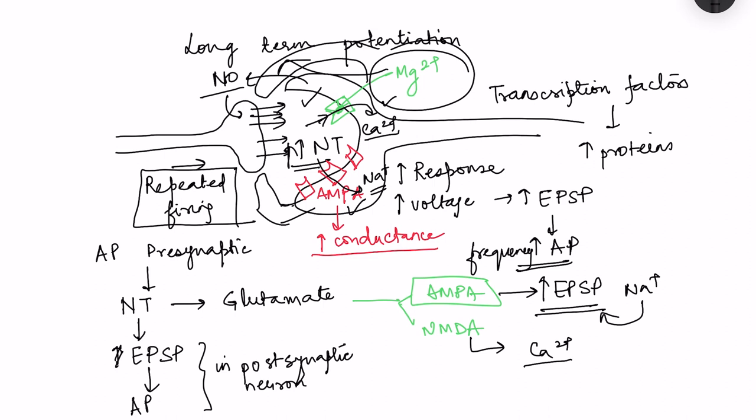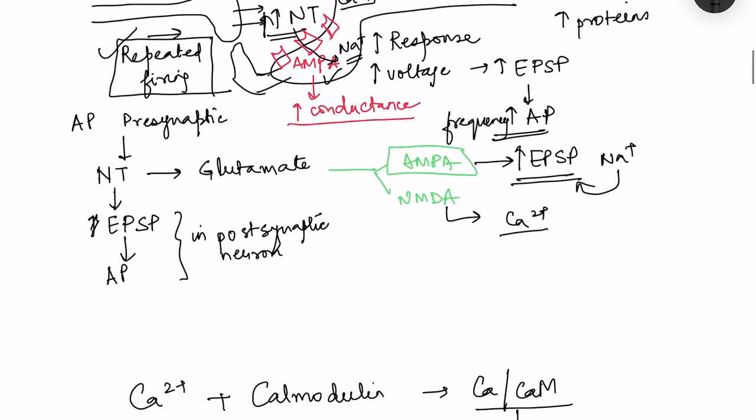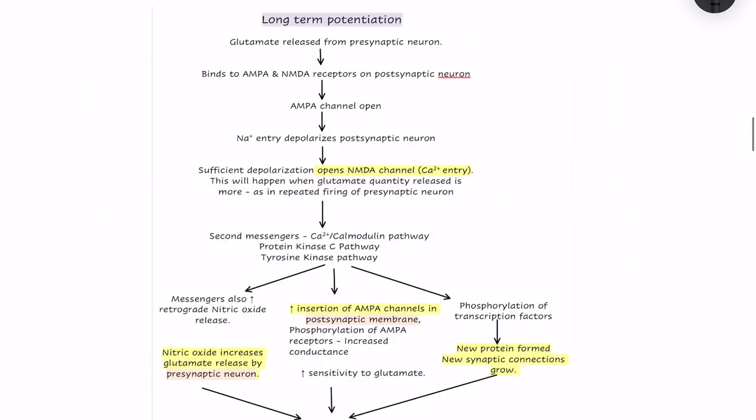The keyword here is repeated firing, because only when repeated firing happens will there be increased release of neurotransmitter. This allows enough AMPA receptor activation so that EPSP reaches the level required to remove the magnesium block from the NMDA receptor.